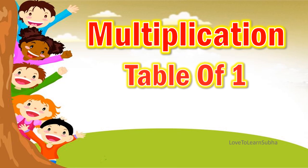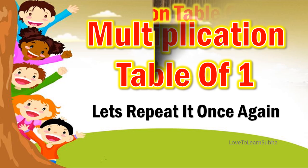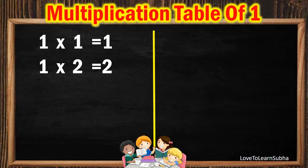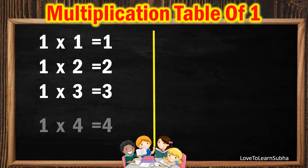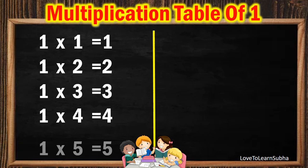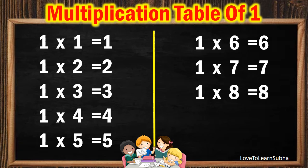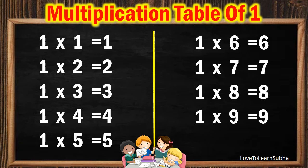Now, let's repeat it once again. 1 1s are 1, 1 2s are 2, 1 3s are 3, 1 4s are 4, 1 5s are 5, 1 6s are 6, 1 7s are 7, 1 8s are 8, 1 9s are 9, 1 10s are 10.